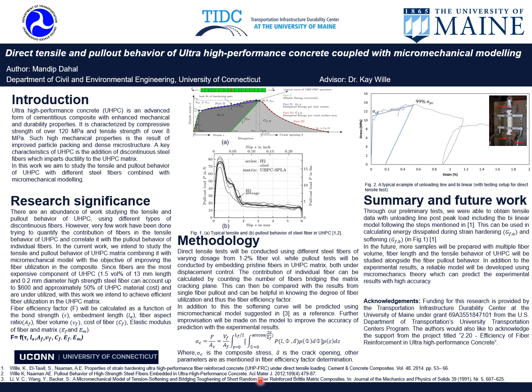To begin with the introduction, ultra-high-performance concrete, or UHPC, is an advanced form of cementitious composite with enhanced mechanical properties and durability properties compared to conventional concrete and high-strength concrete. It is characterized by compressive strength of over 120 MPa and tensile strength of over 8 MPa with strain hardening behavior. Such exceptional mechanical properties are a result of its improved particle packing, achieved by using very fine powder material that results in a dense microstructure.